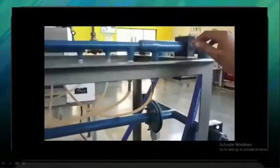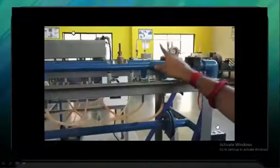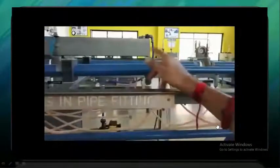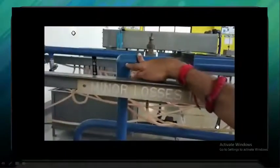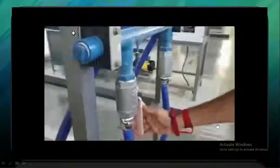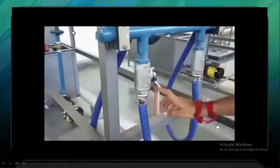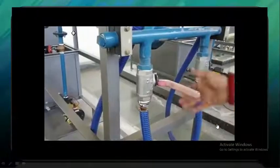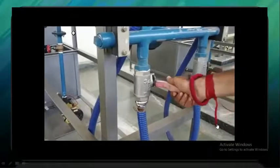We will take three readings for sudden contraction, three readings for sudden expansion, and three readings for sudden bend. This is a valve for the pipe. Along the pipe this valve is open and perpendicular to the pipe this valve is closed. We will keep this valve open.